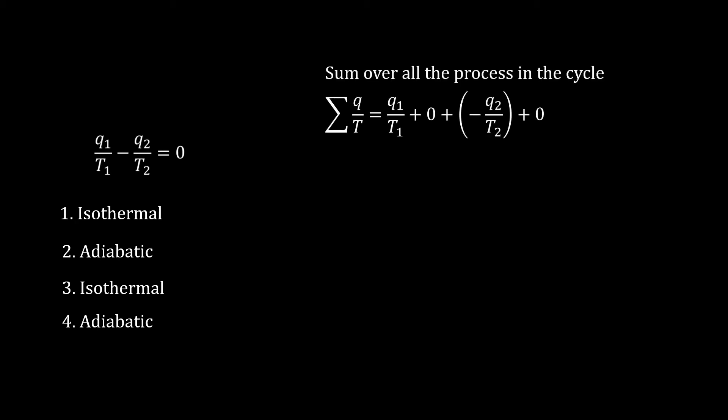Let's write the summation of Q divided by T over all the four steps. It is zero.